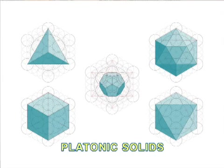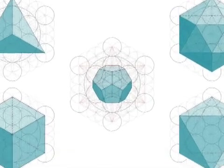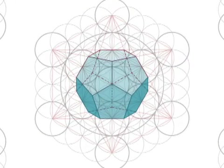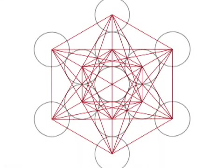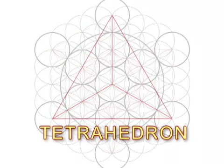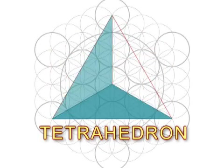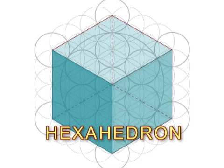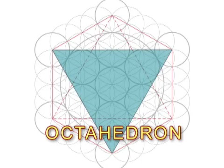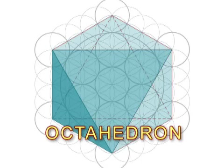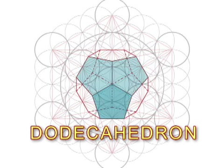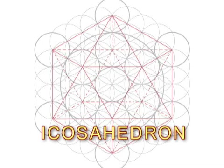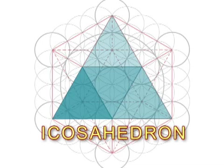Leonardo Passano discovered — and this is the really cool part — that you could create an illusion of all five of the Platonic solids in this graphic. He called it Metatron's Cube. Connecting the edges of four equilateral triangles creates the tetrahedron. Connecting the edges of six squares creates the hexahedron, or cube. Connecting the edges of eight equilateral triangles creates the octahedron. Connecting the edges of 12 pentagons creates the dodecahedron. And connecting the edges of 20 equilateral triangles creates the icosahedron.